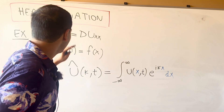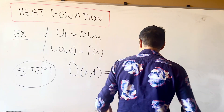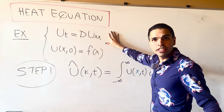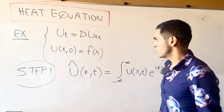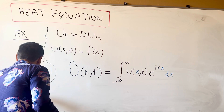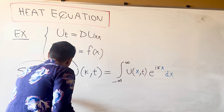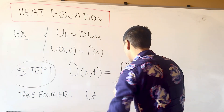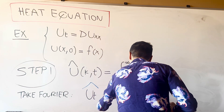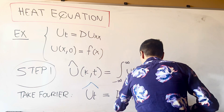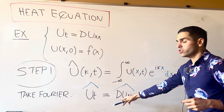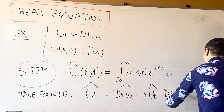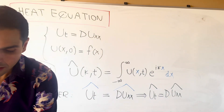The reason is we'll then have a nice first-order ODE with û. Remember the steps from the Laplace transform video: the first thing you have to do is take the Fourier transform. What you get is û_t = d·û_xx, since d is just a constant that comes out.